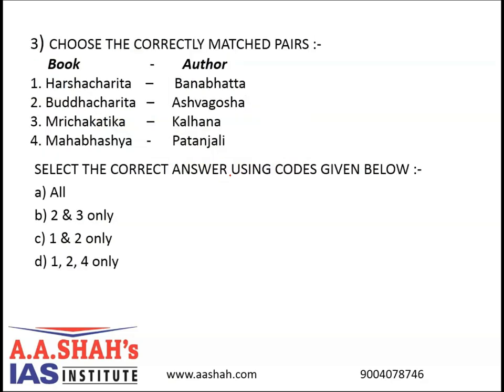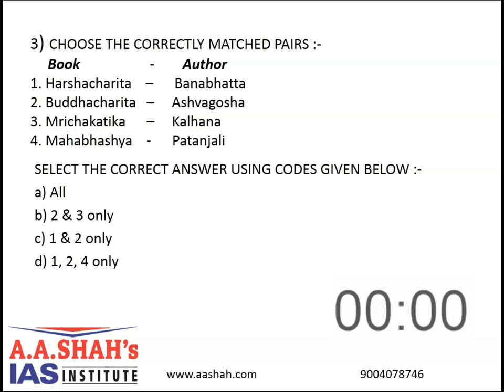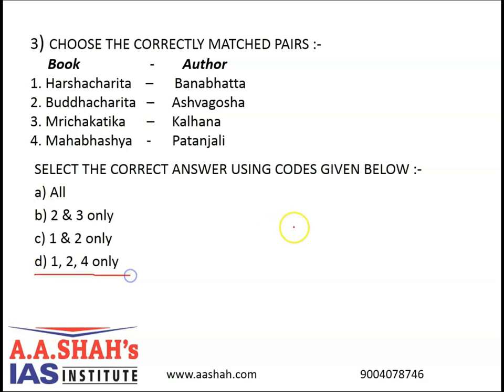Next question. Question number three. Choose the correctly matched pairs — book with the author. Number one: Harsh Charita, author Banna Bhatta. Number two: Buddha Charita, author Ashwagosha. Number three: Vrucha Katika, author Kalhana. Number four: Mahabhasya, author Patanjali. Select the correct answer using the codes given below. A: All. B: Two and three only. C: One and two only. D: One, two, four only. The correct answer is D — one, two, four only — which means the third one is incorrect.